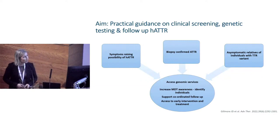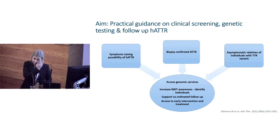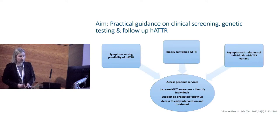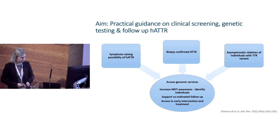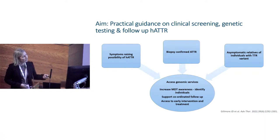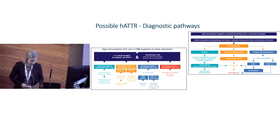The UK consensus document aims to provide practical guidance on clinical screening, genetic testing, and follow-up of individuals with suspected hereditary ATTR or at risk because a family member has a TTR variant. Three main areas are covered: symptoms raising the possibility of hereditary ATTR, biopsy-confirmed ATTR, and asymptomatic individuals who are relatives of someone with a TTR variant. The overall aim is to improve access to genomic services, increase awareness of specialist services and MDT involvement, support coordinated follow-up, and ensure access to early intervention.